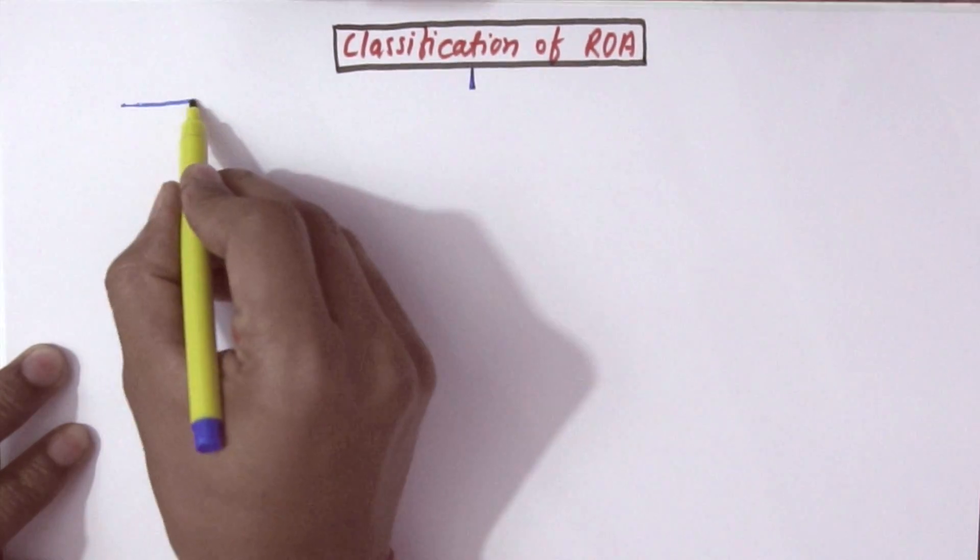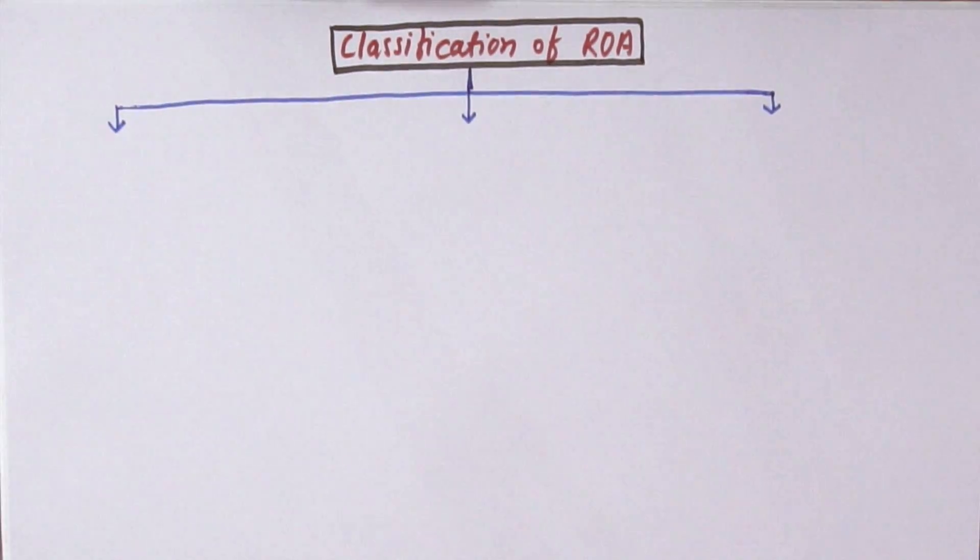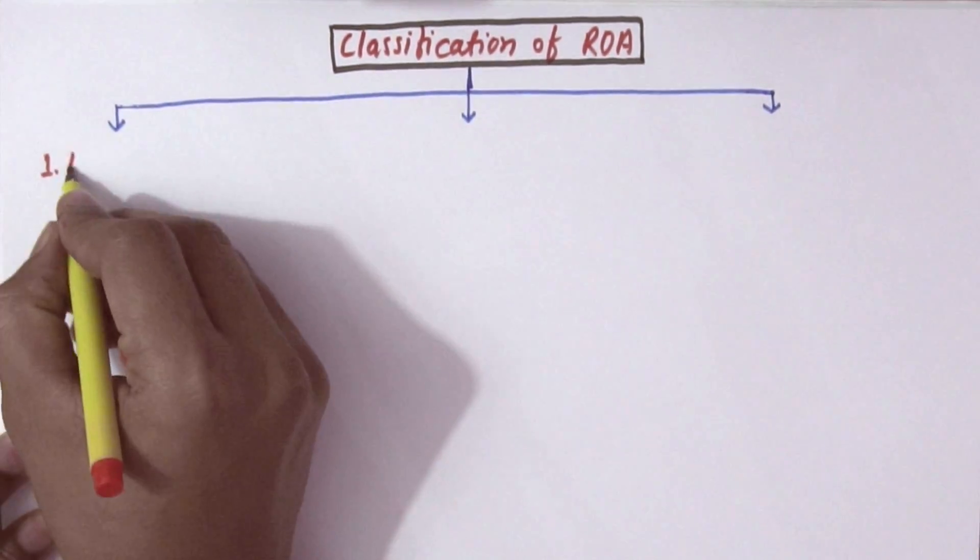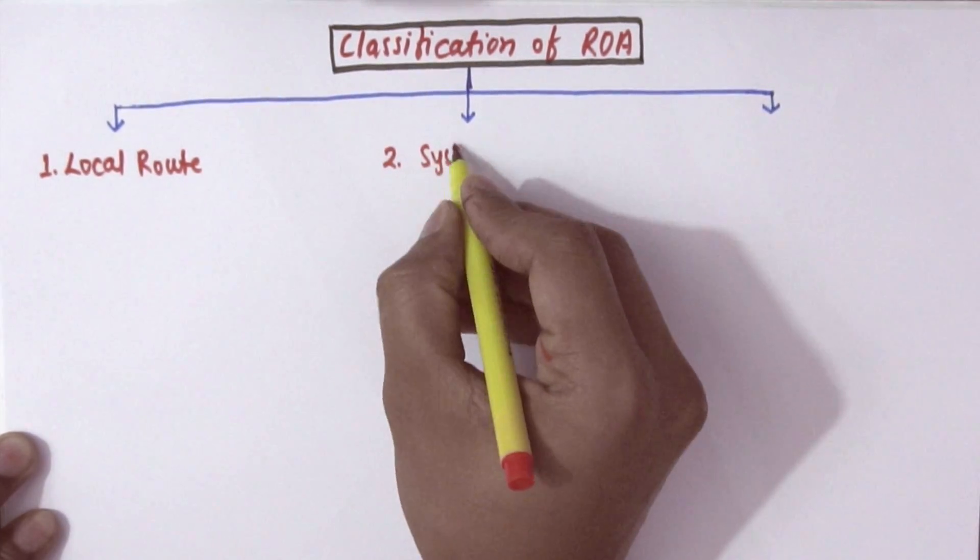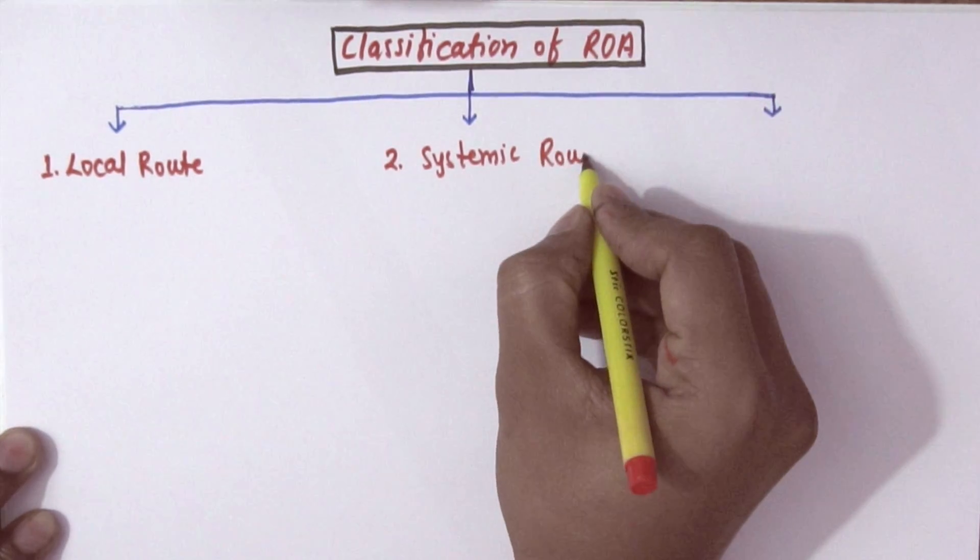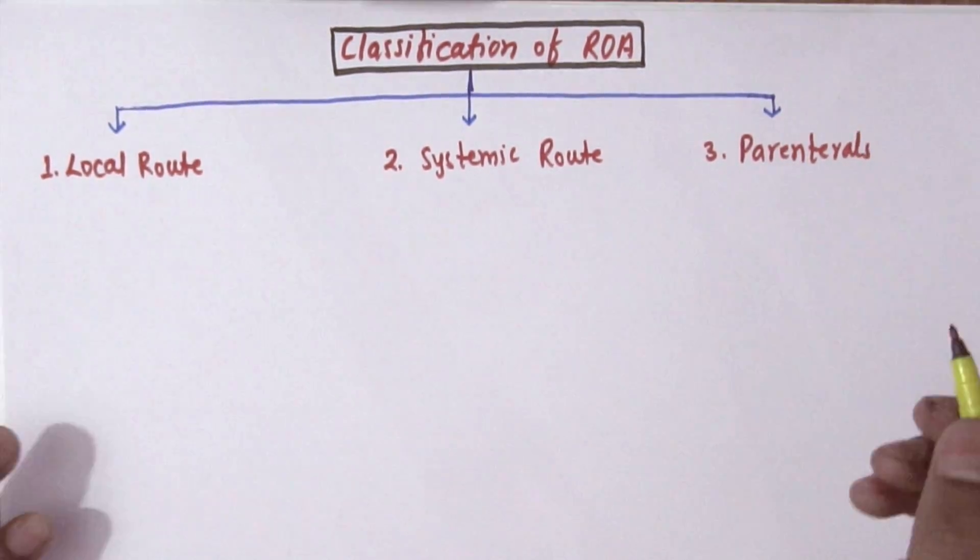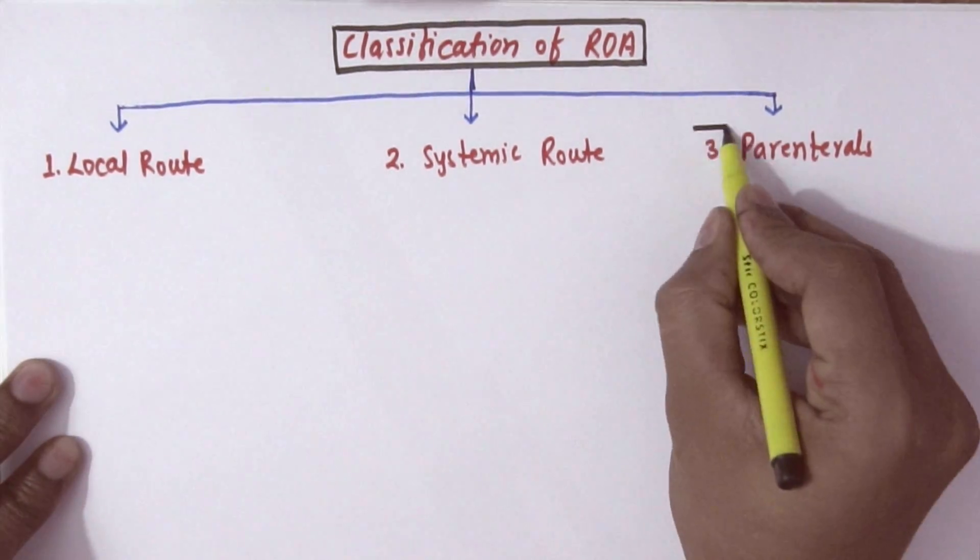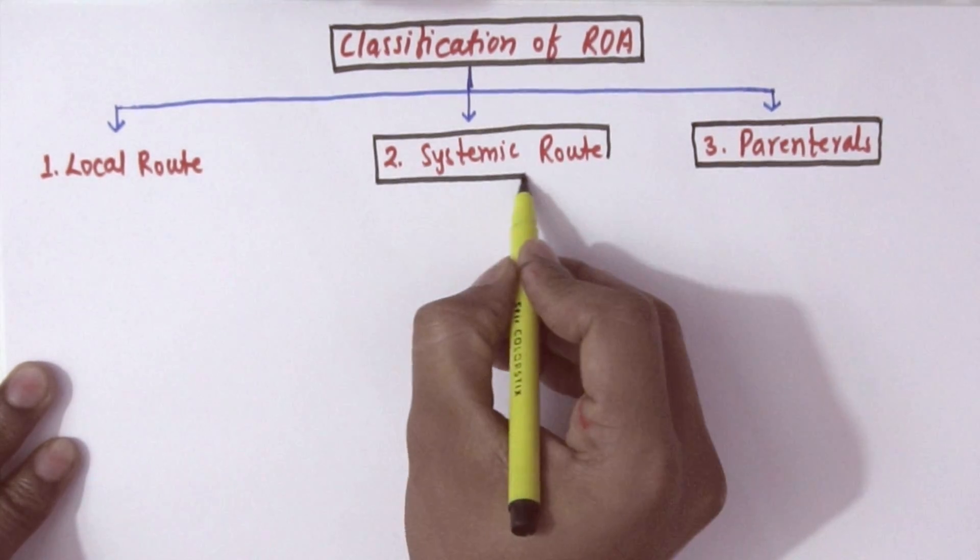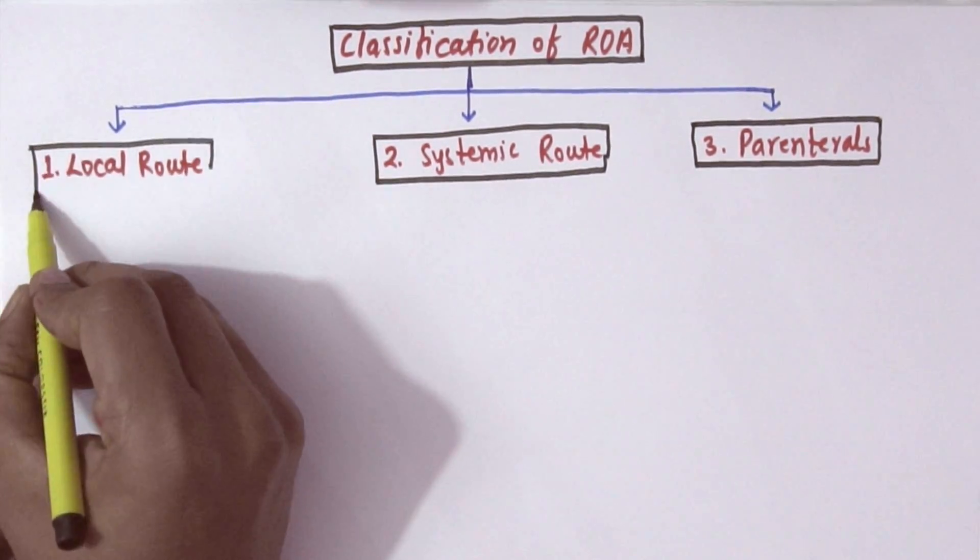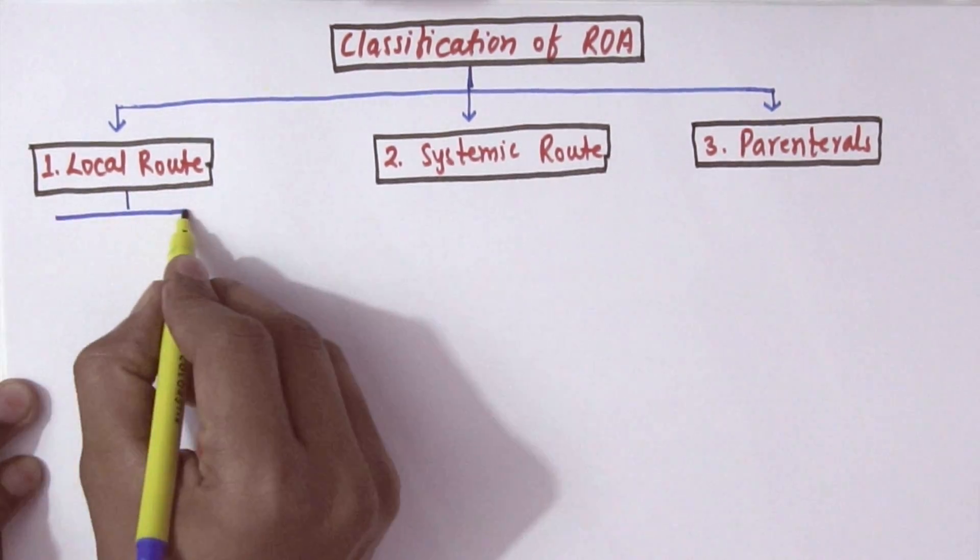Now we will classify routes of drug administration. There are various ways to classify route of drug administration. Some reference books prefer to classify into two categories, some follow three categories. I am following three categories because it is easy to understand. As per this classification, we have three categories like local route, systemic route, and parenterals.